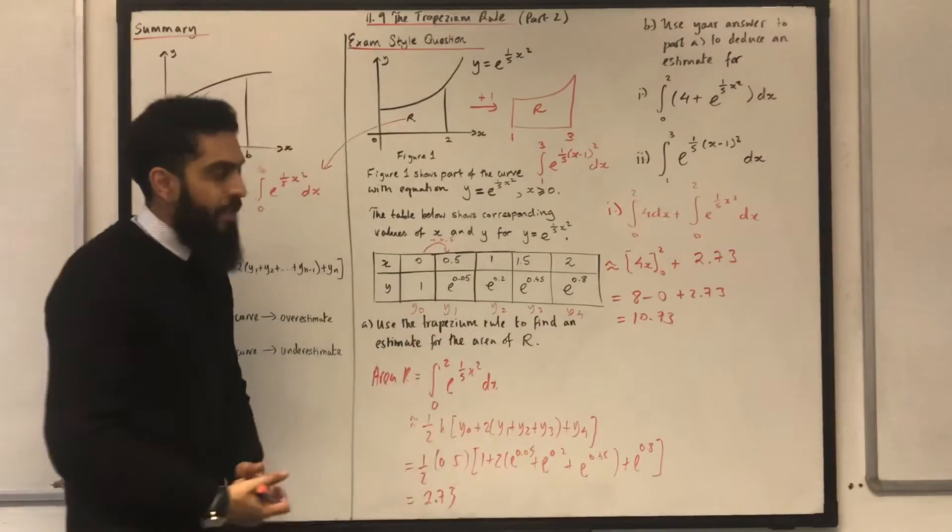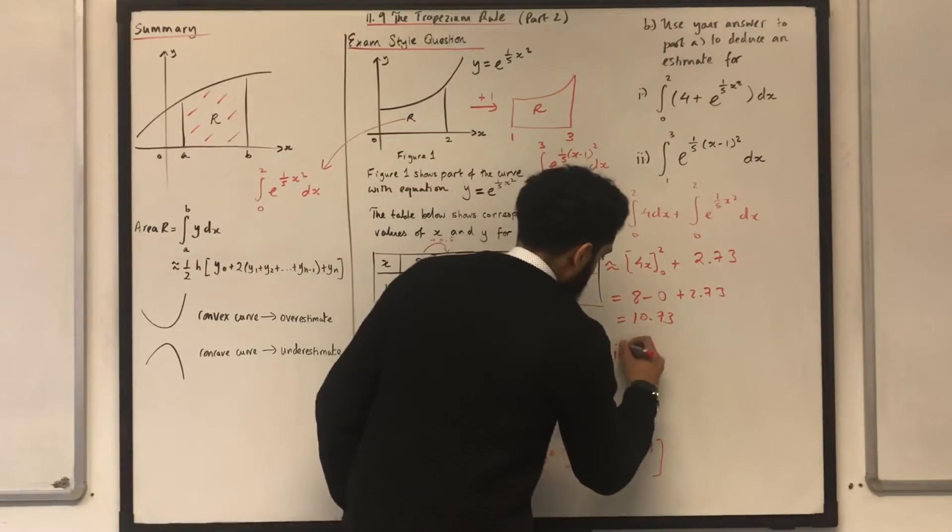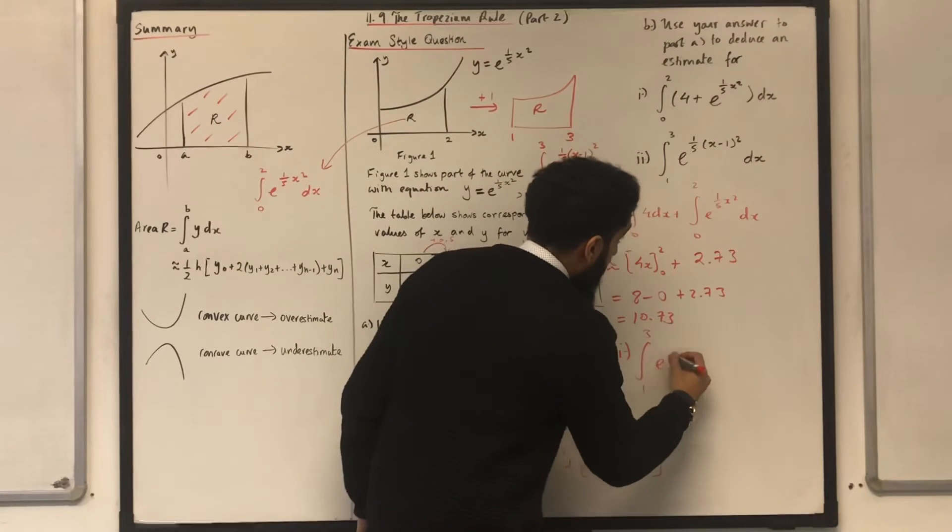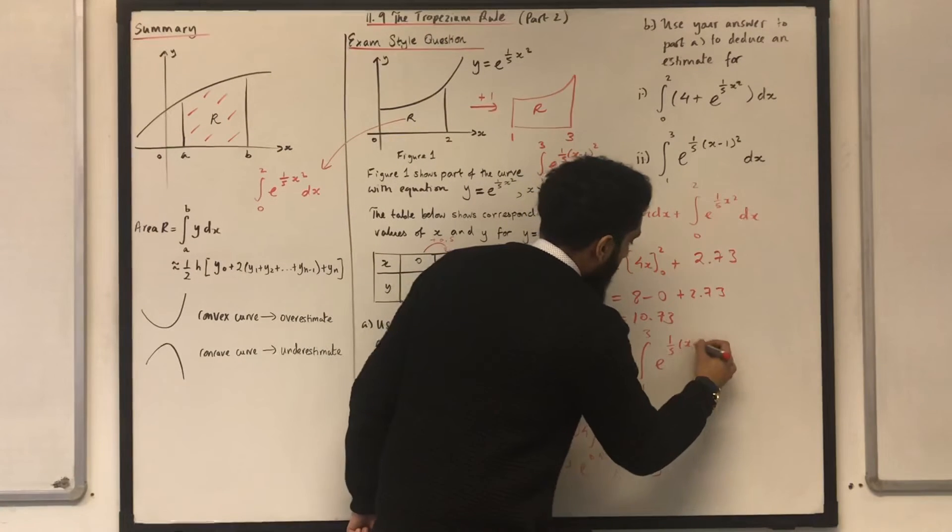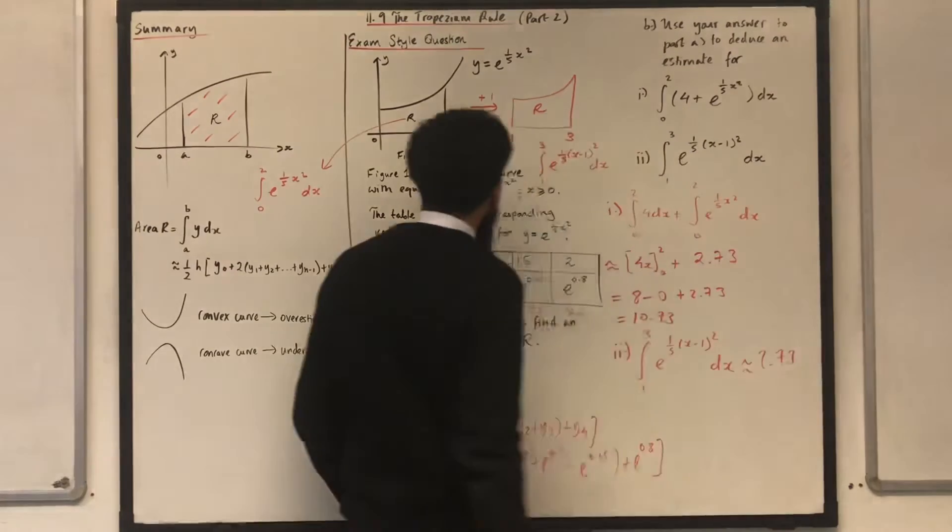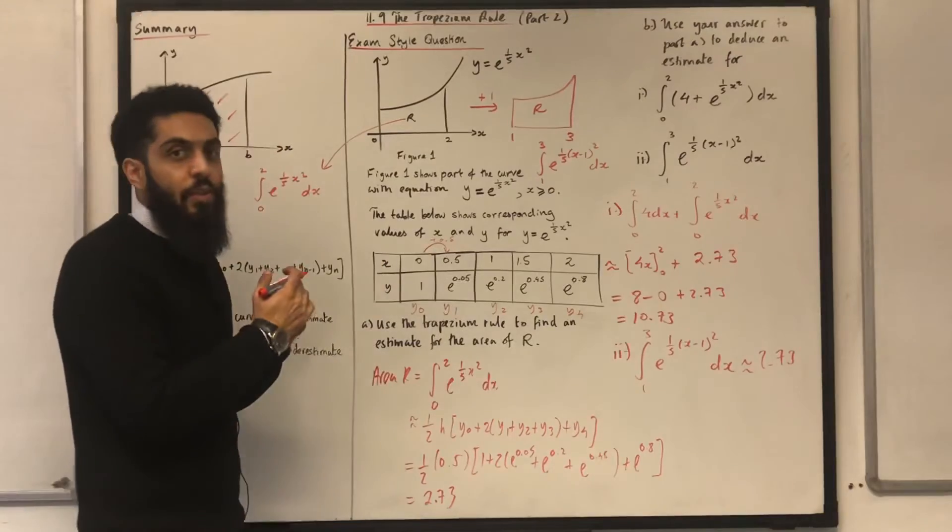What is that integral? The integral from 1 to 3 of e to the power 1 over 5, x minus 1 in bracket squared dx, is approximately 2.73. It's just the area R shifted one unit to the right.